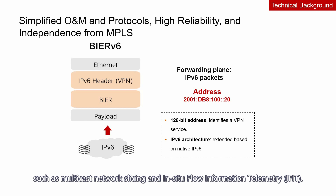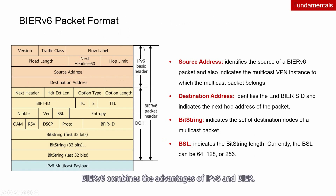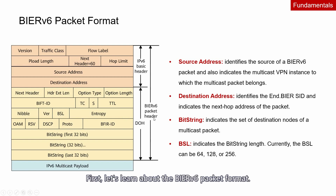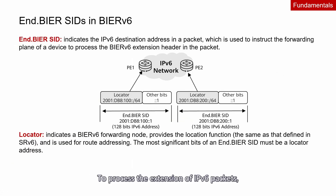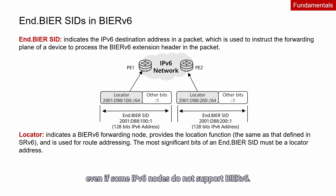Now let's talk about the fundamentals of BIERv6 in terms of the BIERv6 packet format, BIFT, and BIERv6 forwarding process. BIERv6 combines the advantages of IPv6 and BIER. To process the extension of IPv6 packets, BIERv6 defines a new type of SID — the BIER SID. The BIER SID can fully utilize IPv6 unicast route reachability to allow services to be transmitted across the network, even if some IPv6 nodes do not support BIERv6.